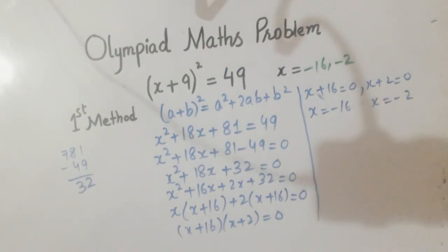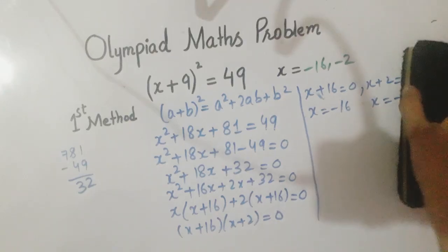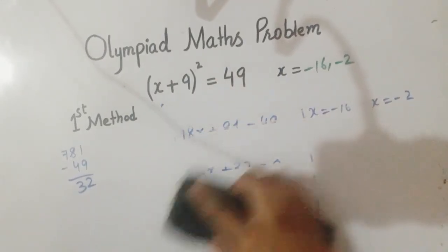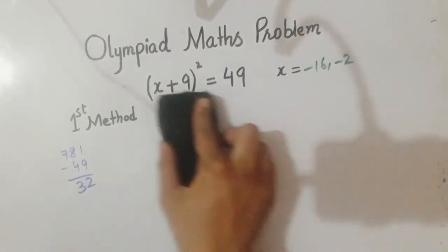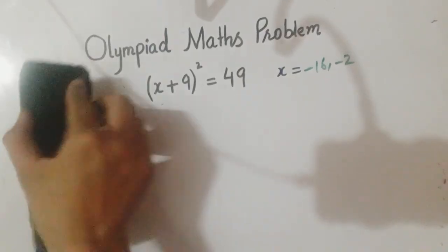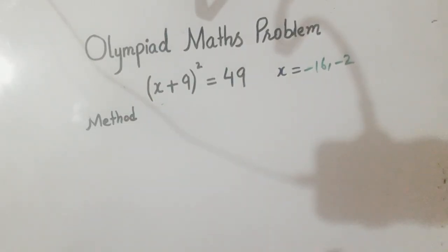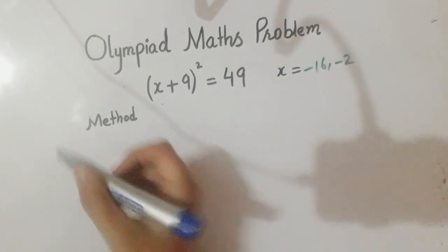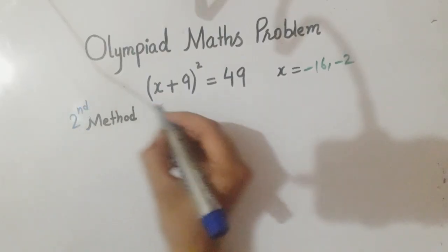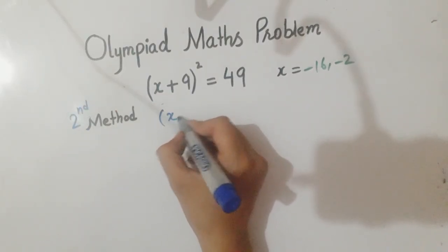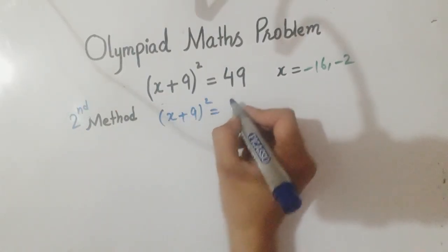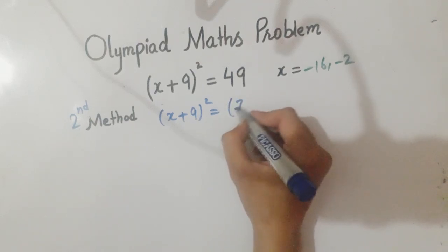Now we will apply the second method to solve this question. This was the first method by which we applied (a+b)². Now for the second method, we will write (x+9)² and 49 can be written as 7².